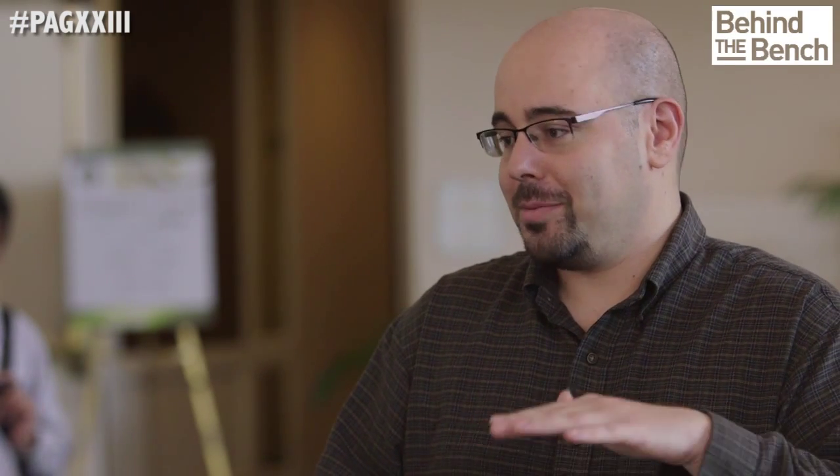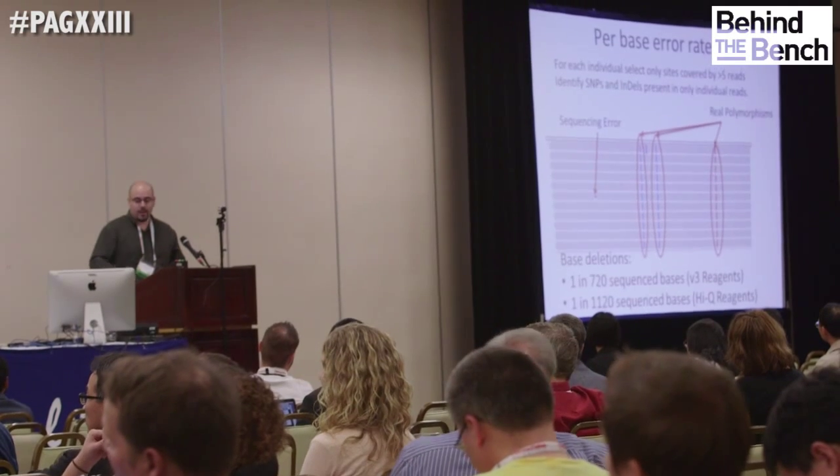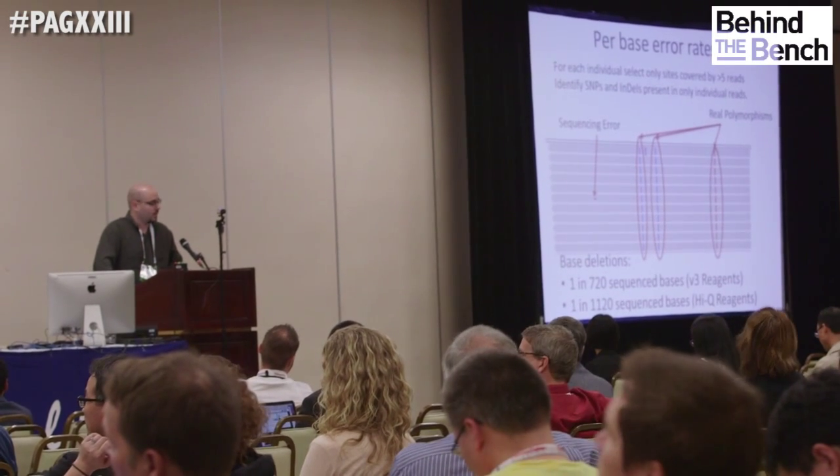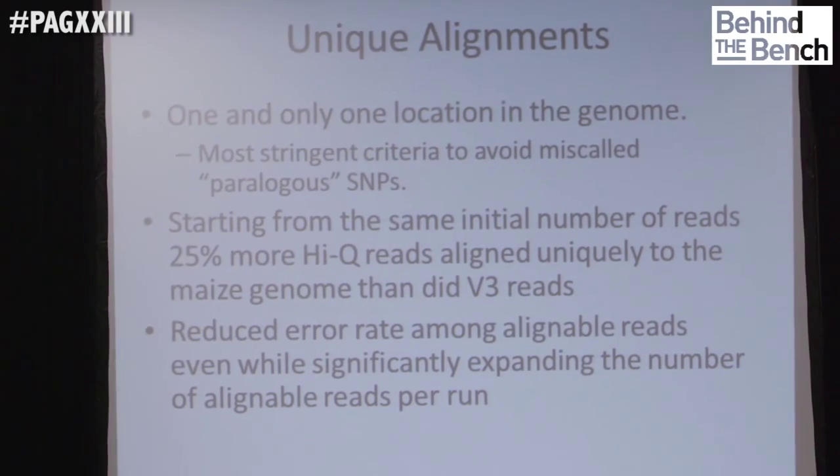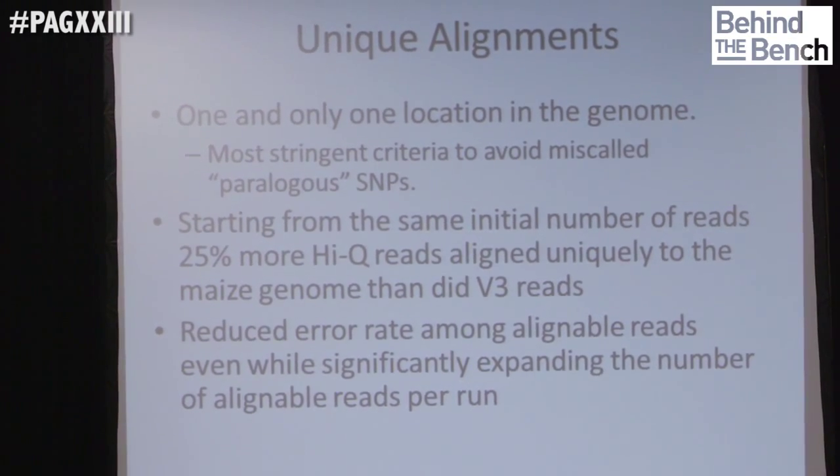That turned out to actually be an understatement of the case, because we were looking at aligned reads to call these errors, and the proportion of reads that aligned with high confidence to only a single location in the genome had increased by 25% from V3 to HiQ. So not only was there a decrease in errors and an increase in accurate genotypes, you also had 25% more reads aligning to the genome — more reads because they were aligning better. So actually what we'd probably do is put more samples into a lane now, because once we have enough reads per sample, it doesn't provide much more benefit to have more reads.